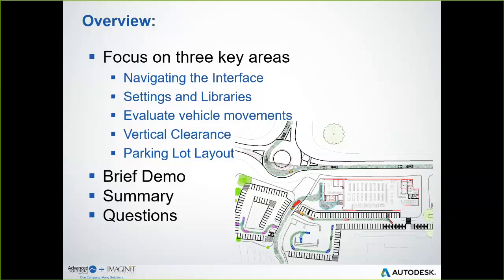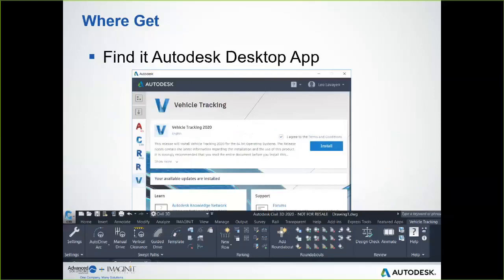The first thing I want to talk about is how to get Vehicle Tracking. If you have the Autodesk desktop app installed, you should be able to see it right on there. It will pull whatever years of releases you're licensed to use. You have to install it — even though you may have access to the entire collection or suite of products, it's not something that installs by default. It can install to basic AutoCAD or any AutoCAD-based platform, but you have to go out there and get it. Once it's installed, you'll have a whole Vehicle Tracking tab on the ribbon with all the tools loaded.